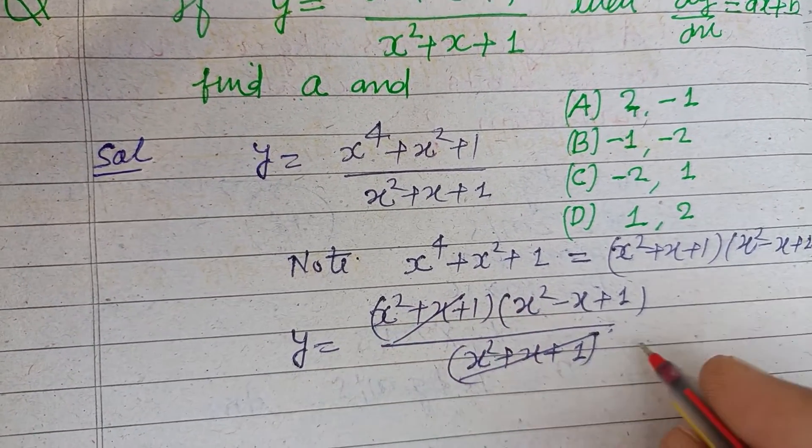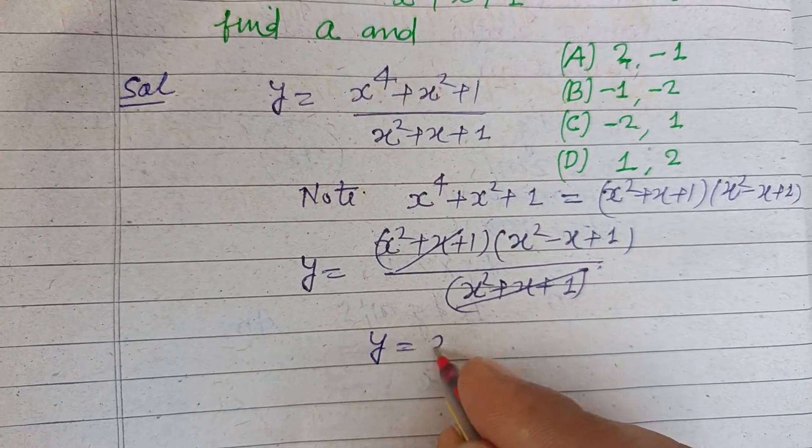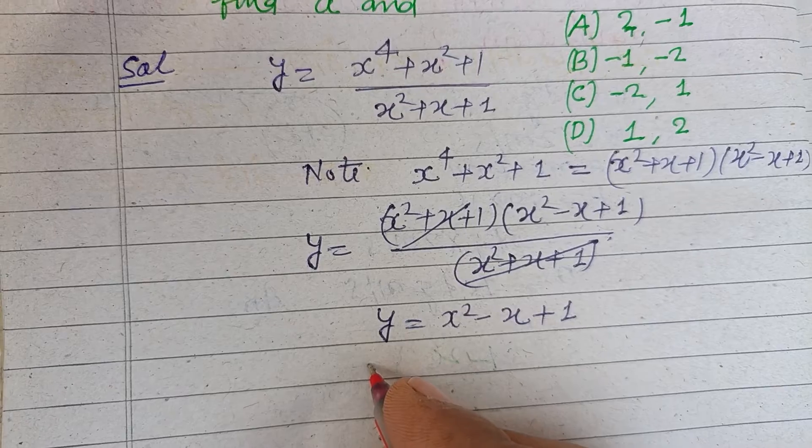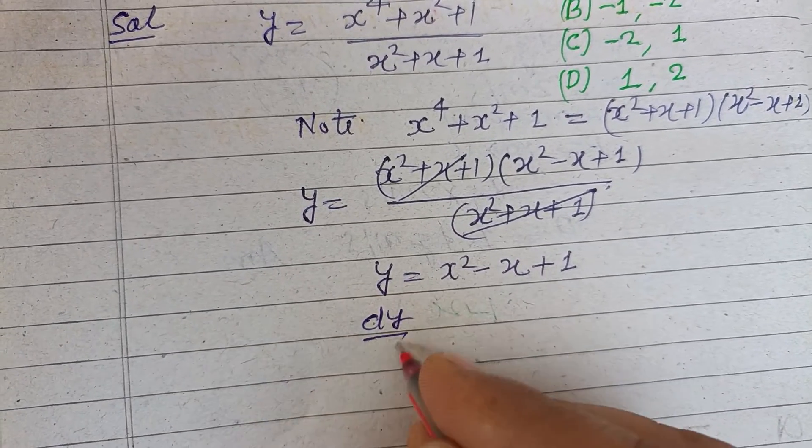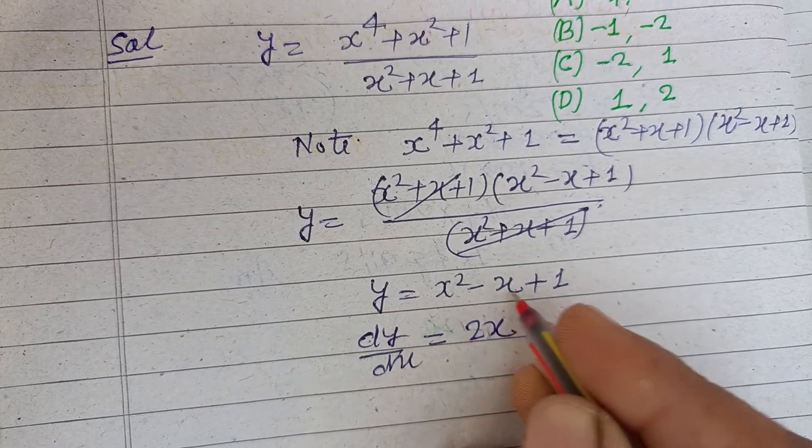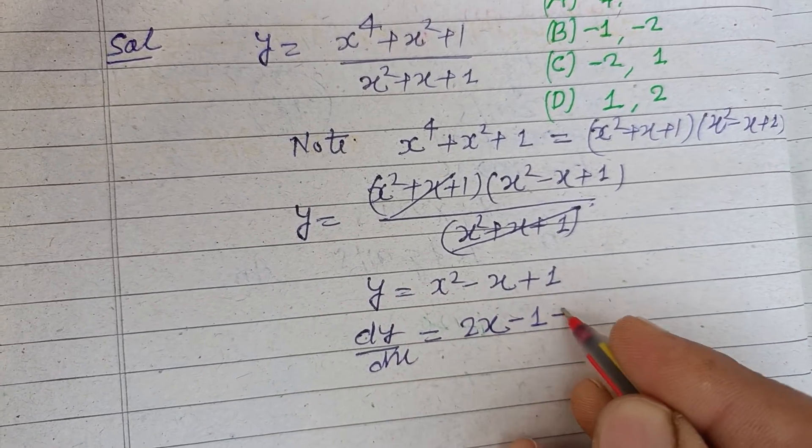Now differentiating with respect to x, dy by dx. Differentiation of x squared is 2x, differentiation of x is minus 1, and this is 0. So finally we got 2x minus 1.